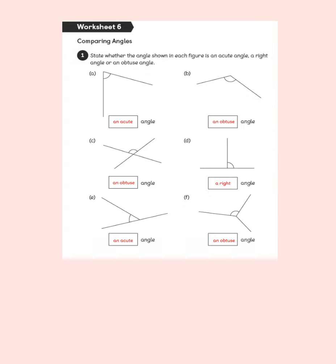Question 1: state whether the angle shown in each figure is an acute angle, a right angle or an obtuse angle, just like we were doing in our guided practice. Angle A — it's smaller than a right angle, so we've got an acute angle. Angle B is bigger than a right angle, so it's obtuse. C — the angle marked out with the arc is bigger than a right angle, so obtuse. D — they've marked a right angle, but cleverly with an arc rather than a square. E — the angle marked is acute because it's smaller than a right angle. And F is an obtuse angle.